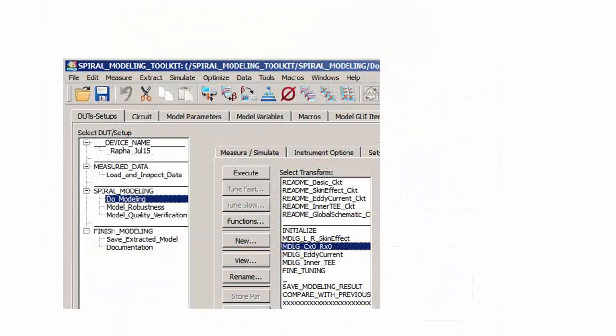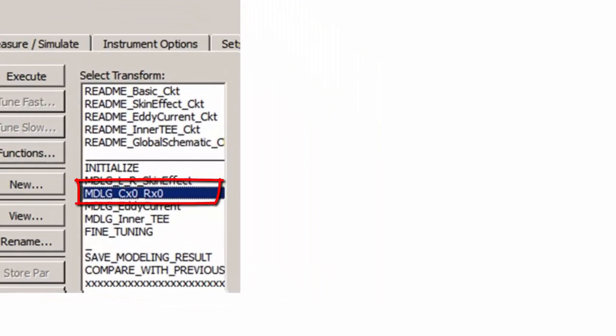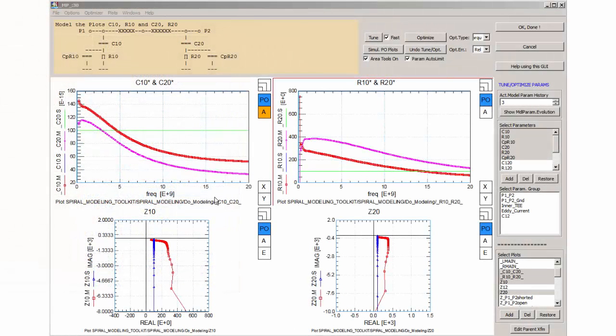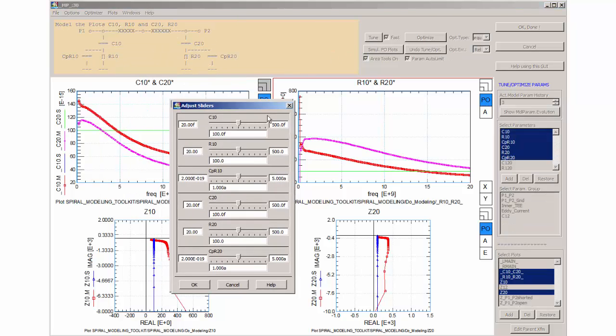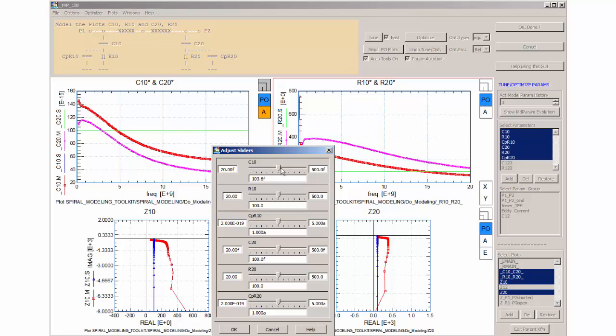The next step is the modeling of the capacitive losses at each port. I hit Modeling Capacitors and Resistors and get a new modeling tool window. Inspecting the plots C10 and C20, I first tune the capacitor from port 1 to ground, C10, and then capacitor C20 from port 2 to ground.